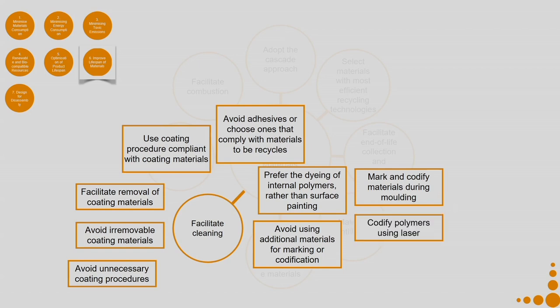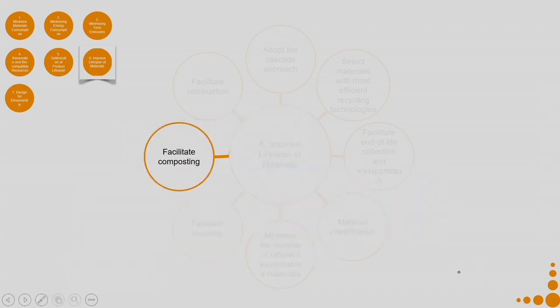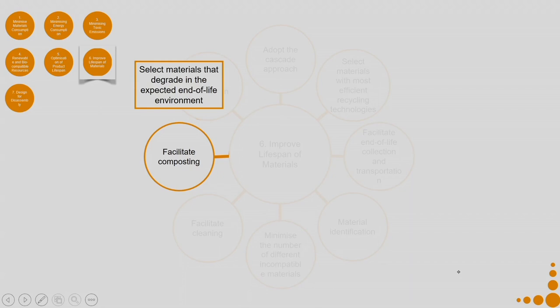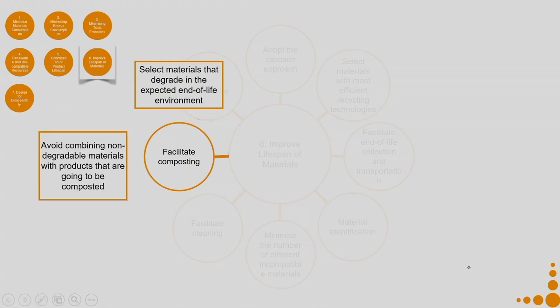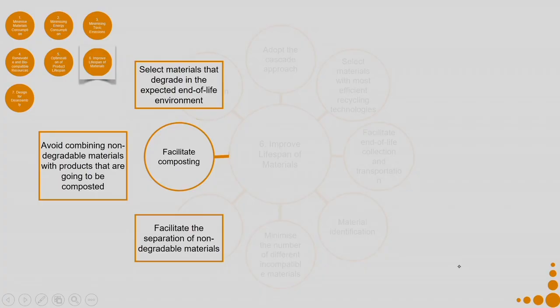Then facilitate composting: select materials that degrade in the expected end-of-life environment. Avoid combining non-degradable materials with products that are going to be composted — for example, paper can be composted but if there are staples on the paper, you cannot compost it; you have to remove those staples first. Imagine a truckload of stapled paper — who is going to remove all the staples? Facilitate the separation of non-degradable materials.